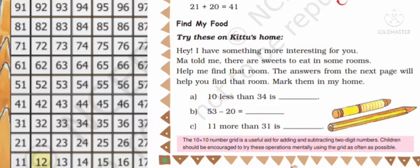Try these on Kittu's home. Hey, I have something more interesting for you. Ma told me there are sweets to eat in some rooms. Kittu's ma told that there are some sweets in some rooms that you have to help Kittu to find the rooms in which his mother kept sweets.